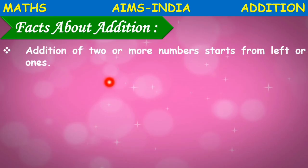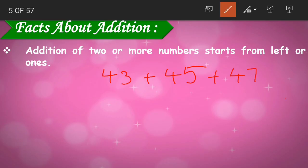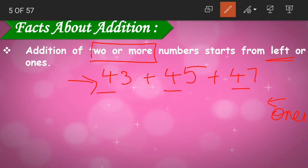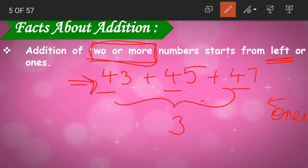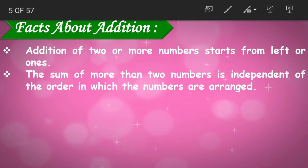Now let us learn some facts about addition. Addition of two or more numbers can start from the left or from the ones place. When we have three or more numbers, addition can be done either from the left or from the ones — whichever is convenient.